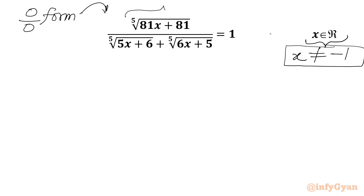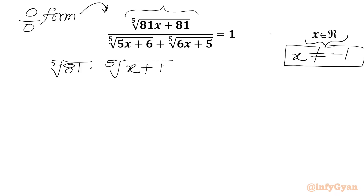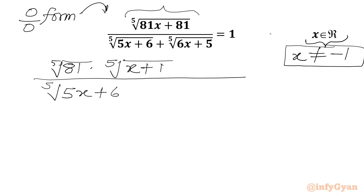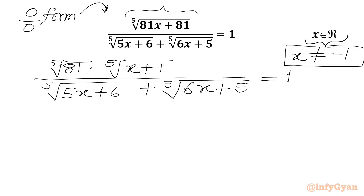Now I will take 81 common from here. We will write the fifth root of 81 times the fifth root of x plus 1, over the fifth root of 5x plus 6 plus the fifth root of 6x plus 5. RHS will be 1.